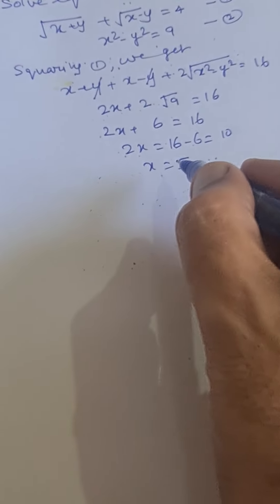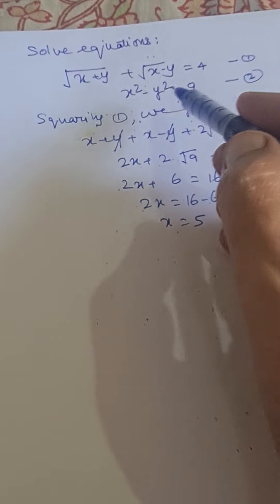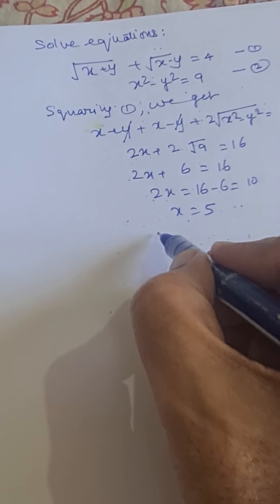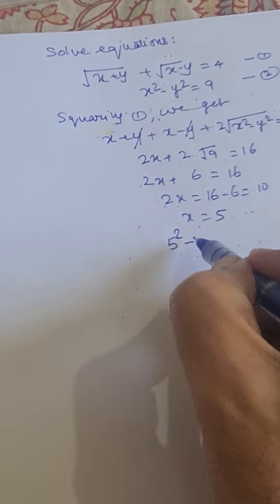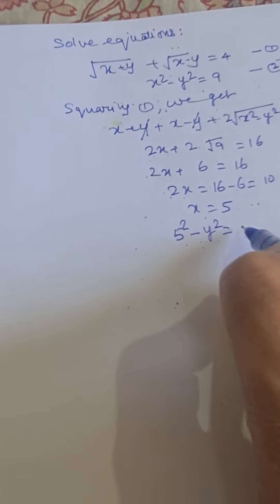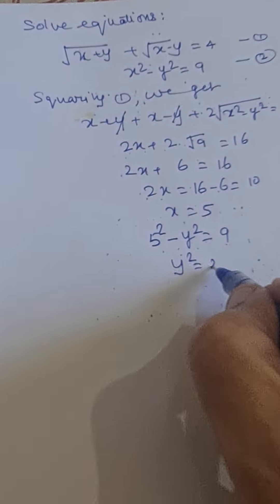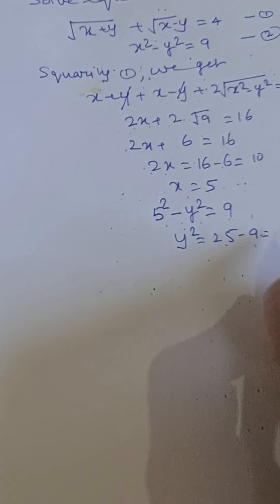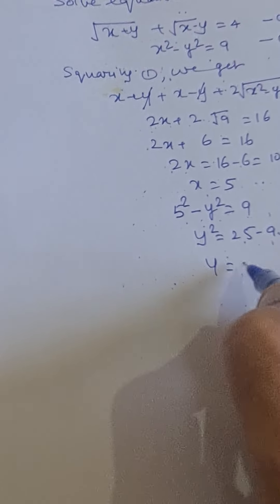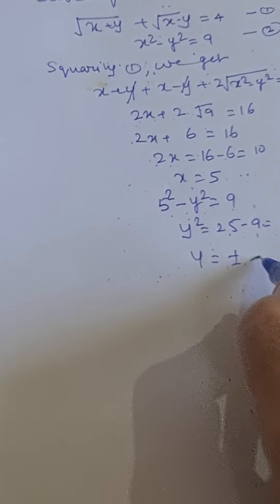Now we put this x equal to 5 in this equation. Then we get 5 square minus y square equal to 9, or y square equal to 25 minus 9 equal to 16. Or y equal to plus minus 4.